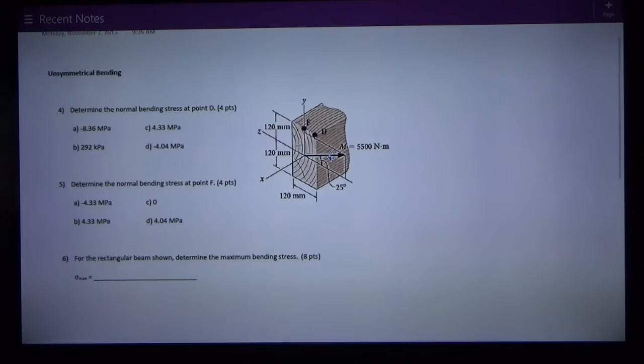Right now we have an unsymmetrical bending problem which could also be called bending about two axes. We have the basic formula of bending which is normal stress σ = My/I where M is the moment about the axis, y is the distance from that neutral axis, and I is the moment of inertia about that axis. In this case we have y and z axes and we have bending about both axes. You can think about this as two problems in one and you combine them.